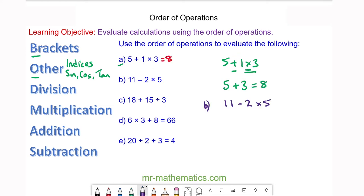For question b, we do the multiplication before the subtraction. So we have 11 - 2 × 5, which is 10, and 11 - 10 is 1.